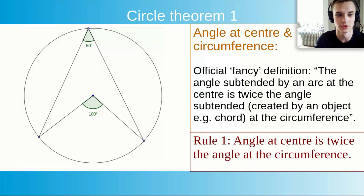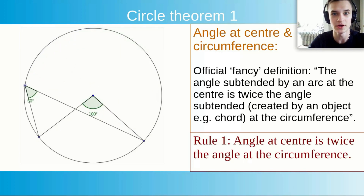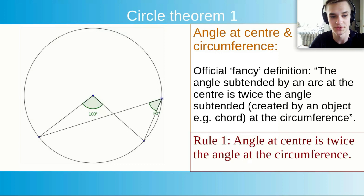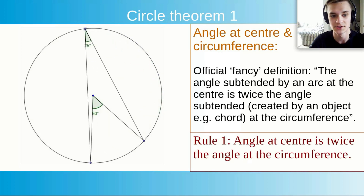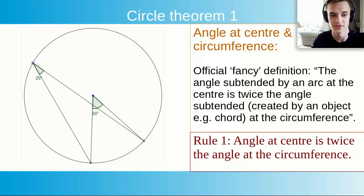Looking at the animation, you are going to see that when we have a central angle which is 100 degrees in this case, the angle at the circumference is always going to be 50 degrees. No matter where it is placed, it is always going to be two times smaller than the actual angle at the centre. You can see that the angle at the circumference is moving, but its value doesn't change. Now if we move the bottom point, the angle at the centre is 50 degrees, so the angle at the circumference is 25 degrees.